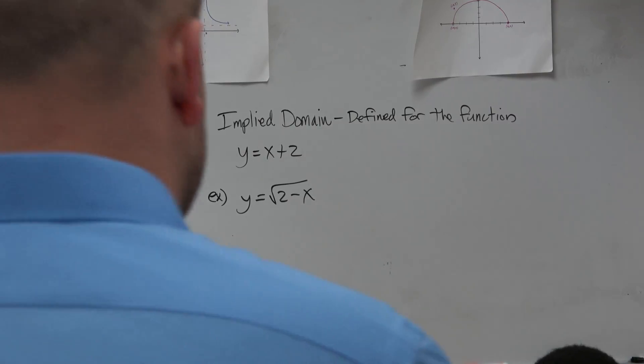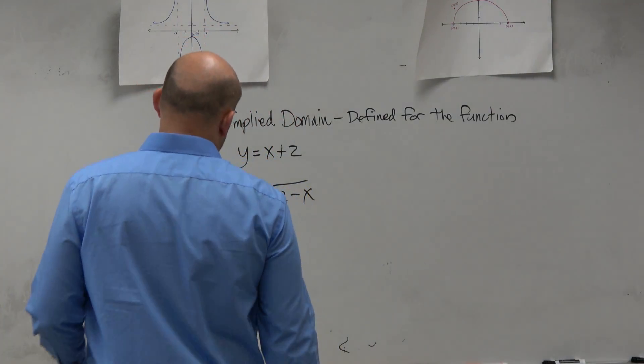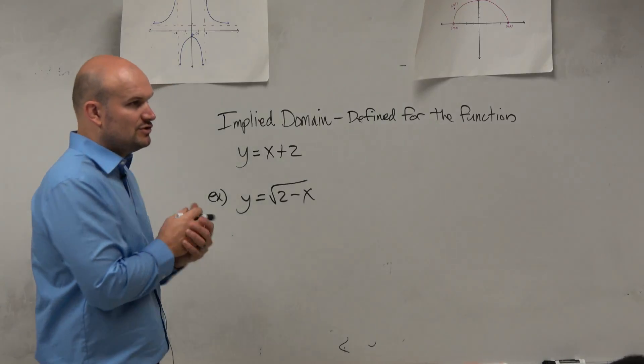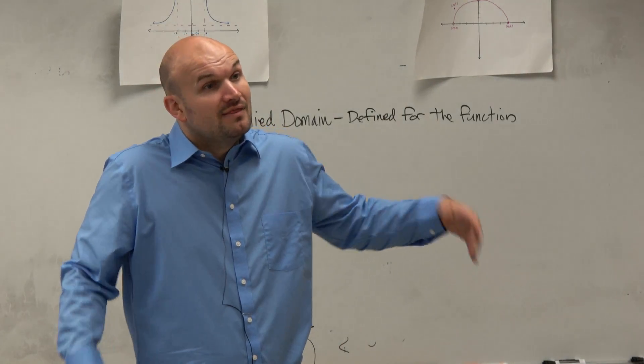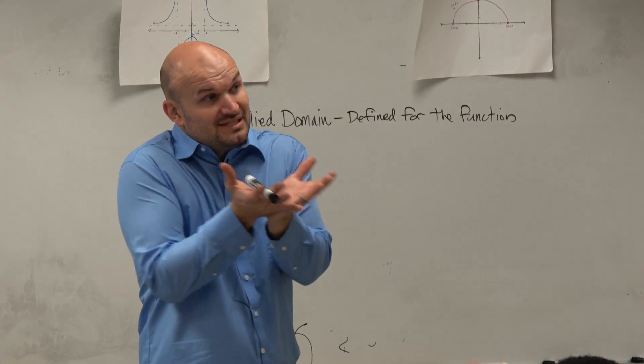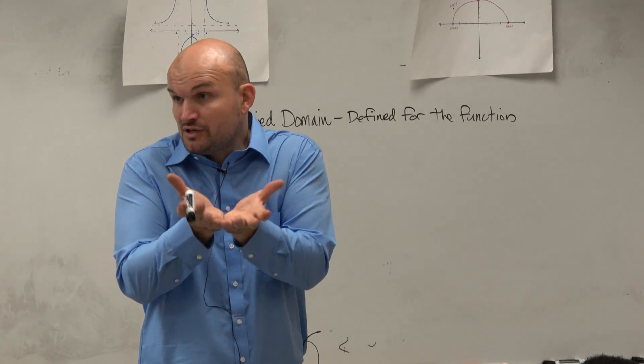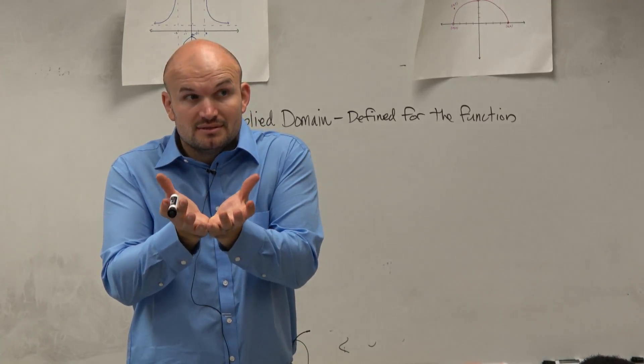If I'm identifying the implied domain of y equals the square root of 2 minus x, from our investigation, I know that at least under the radical, if something's going to be defined, it has to be greater than or equal to 0, right?